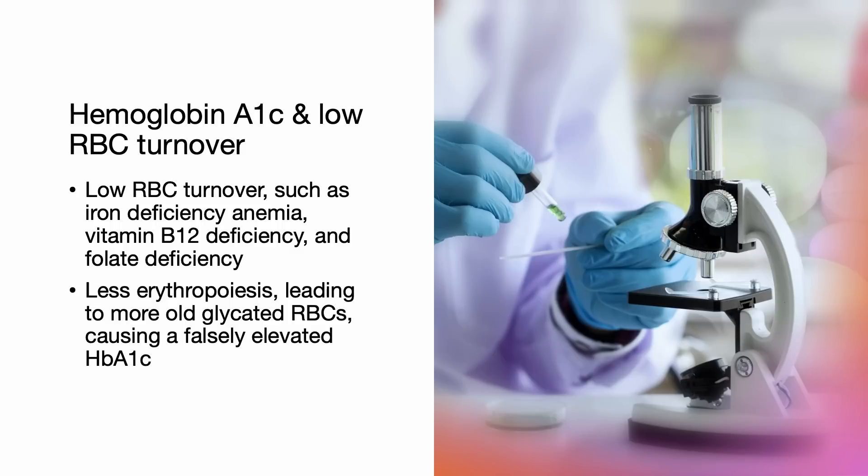In conditions that have low RBC turnover, such as iron deficiency, vitamin B12 deficiency, and folate deficiency, there will be less erythropoiesis leading to more old glycated RBCs, causing a falsely elevated hemoglobin A1c.